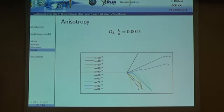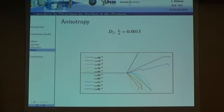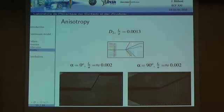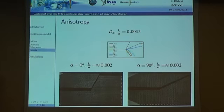We can vary alpha continuously in the numerical simulation and observe an almost continuous evolution of the crack path angle with respect to the unit cell orientation. We tested the two experimental cases at alpha equal to 0 and alpha equal to 90 degrees.